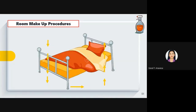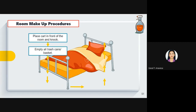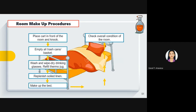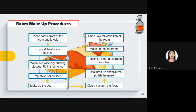Now let's proceed to room makeup procedures. The first thing to do is place the cart in front of the room and knock. After entering, empty all trash cans and baskets, wash and wipe dry drinking glasses, refill the thermo jug if present, replenish soiled linens, and make up the bed. After making up the bed, clean and vacuum the floor, then dust furniture and fixtures and polish mirrors. Replenish other guest room supplies like morning kit items such as toothbrush and toothpaste, then check the overall condition of the room.